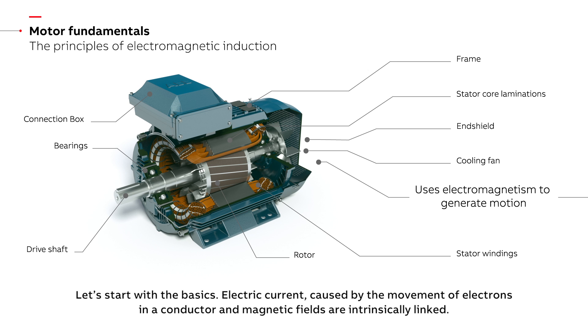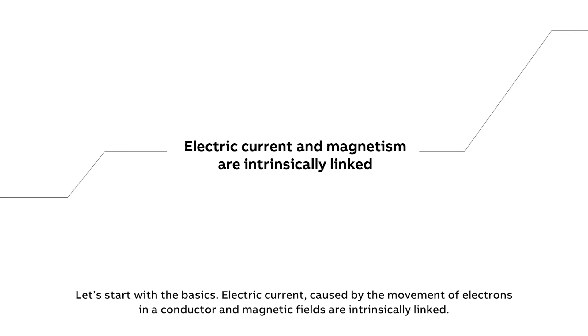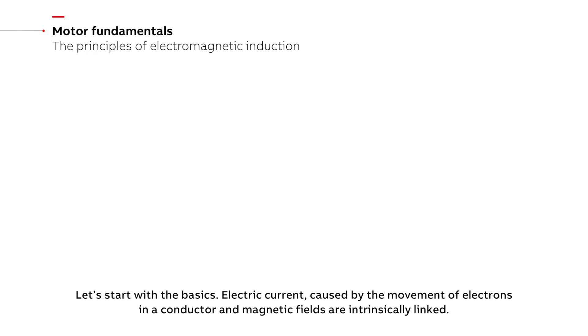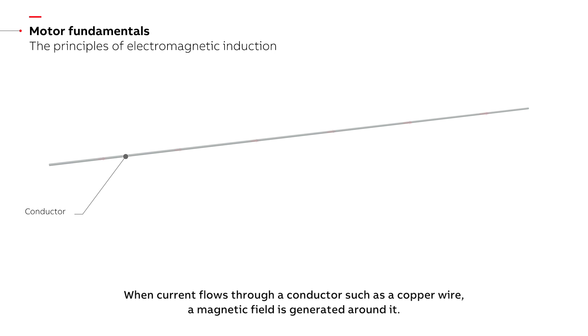Let's start with the basics. Electric current caused by the movement of electrons in a conductor and magnetic fields are intrinsically linked. When current flows through a conductor, such as a copper wire, a magnetic field is generated around it.